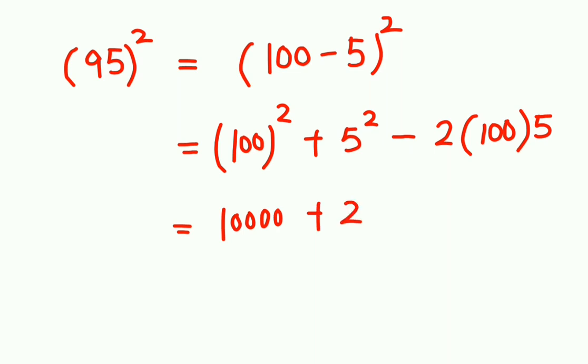100 square is 10,000 plus 25 minus 1,000. Tho humara answer a gaya 9025, pita.